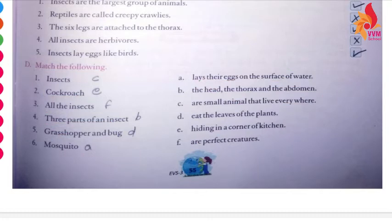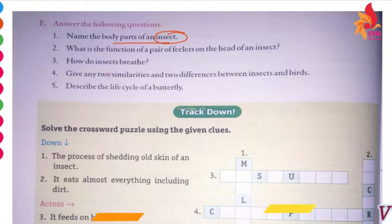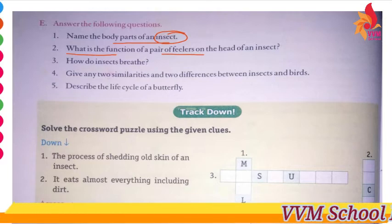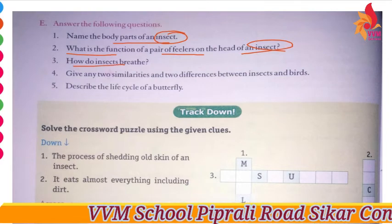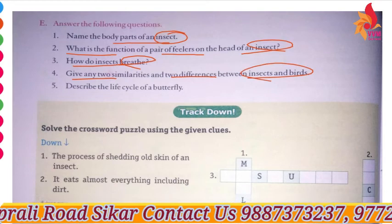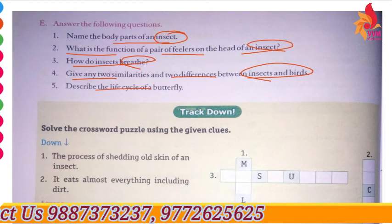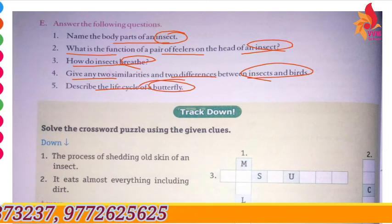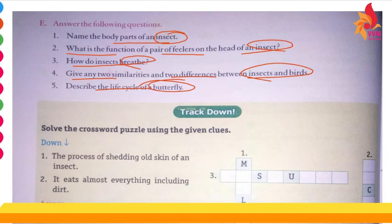Answer the following questions: Name the body parts of an insect. What is the function of a pair of antennae on the head of an insect? How do insects breathe? Give any two similarities and two differences between insects and birds. Describe the life cycle of a butterfly. Now your chapter revision is completed — best of luck for your exam, thank you.